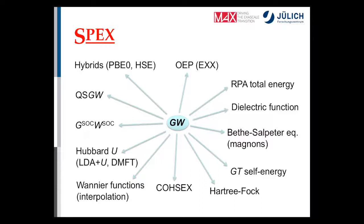The SPEX code, which Daniel mentioned, is an implementation of the GW method, started many years ago. Since then it has acquired a number of other functionalities: self-consistent GW, a combination of GW and spin-orbit coupling, calculation of Hubbard U parameters, hybrid functionals, RPA total energy, and so on.